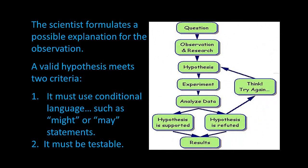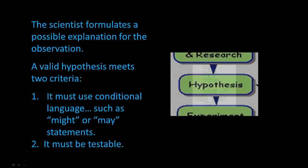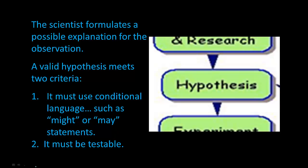The next step of the scientific method is that the scientist formulates a hypothesis, or a possible explanation for the observation. A valid hypothesis meets two criteria: it must use conditional language such as 'may' or 'might' statements, and it must be testable — which means you have to be able to test it. By the way, feelings are not testable.